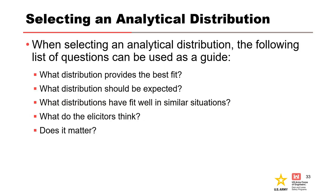How do we choose a distribution? Five questions can be used as a guide: What distribution provides the best fit? What distribution should be expected? What distributions have fit well in similar situations? What do the elicitors think? Does it even matter? Let's expand on what elicitors think and talk briefly about subjective probability estimates.